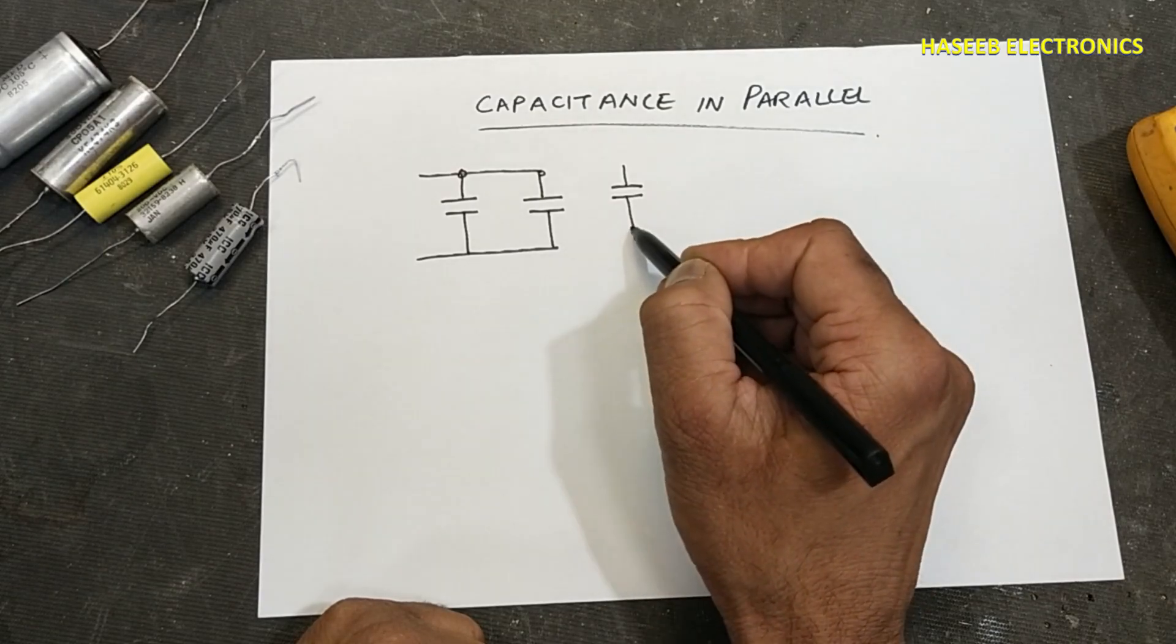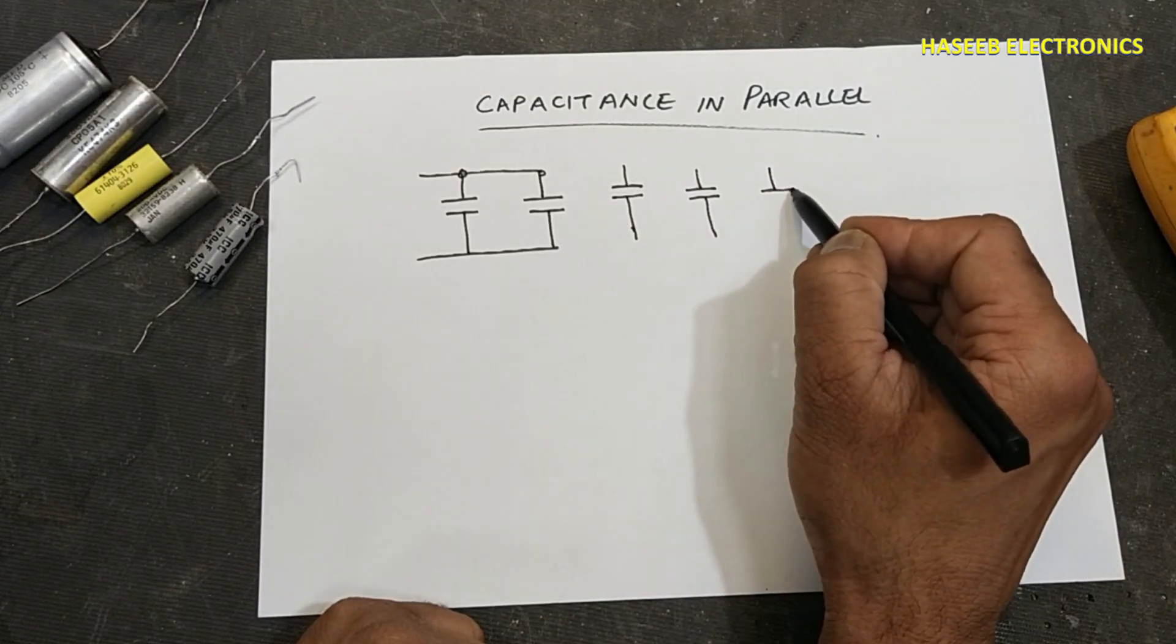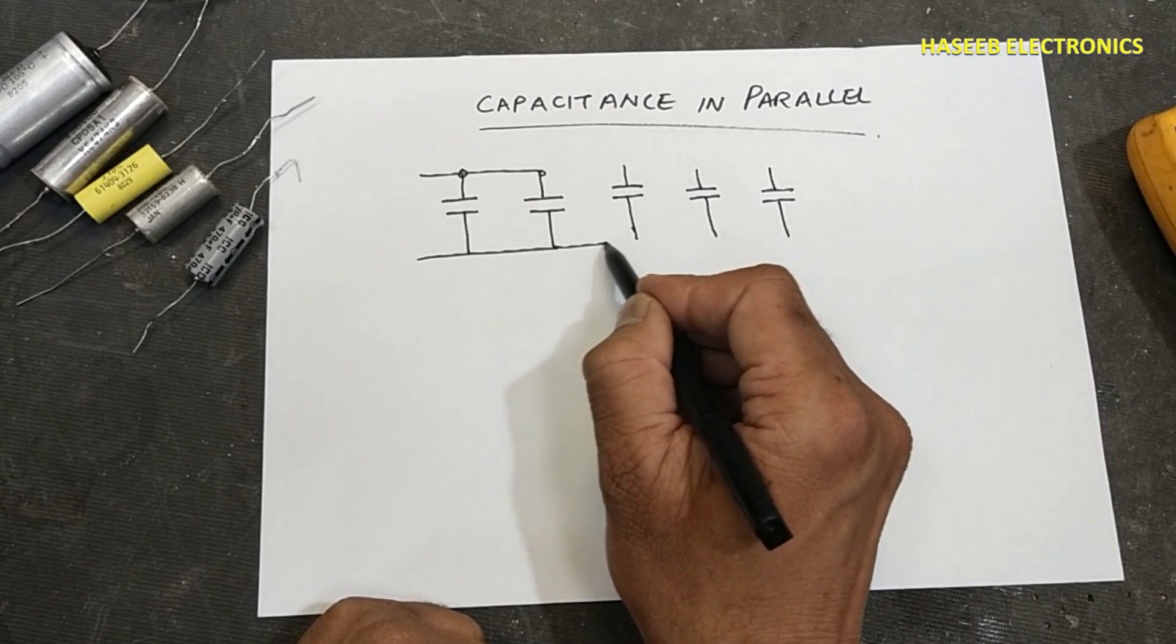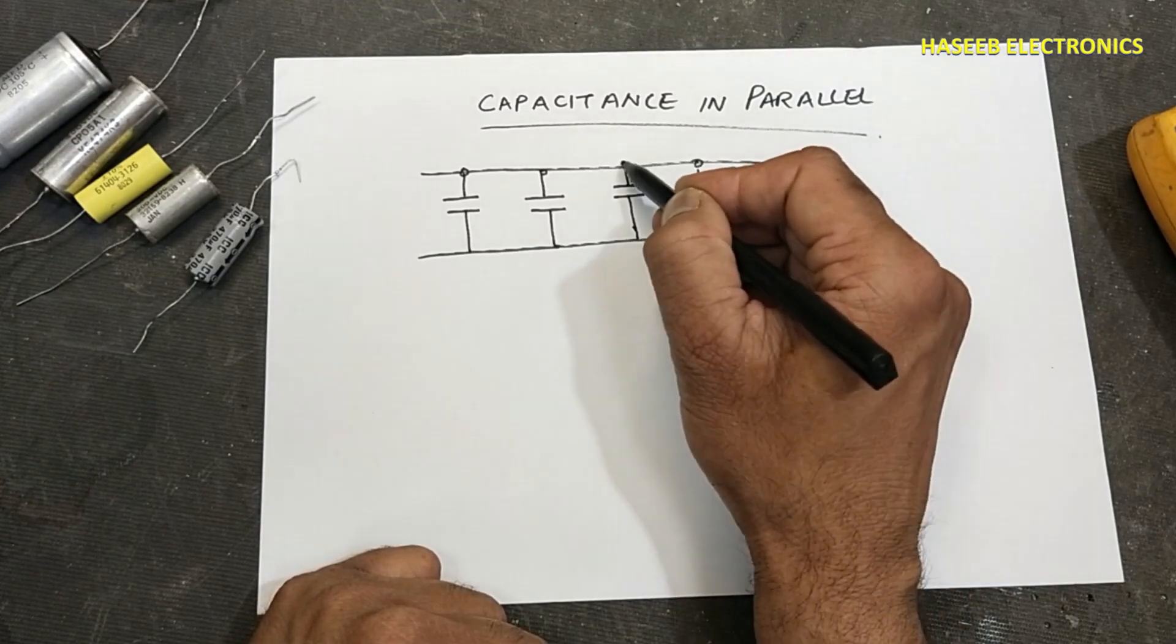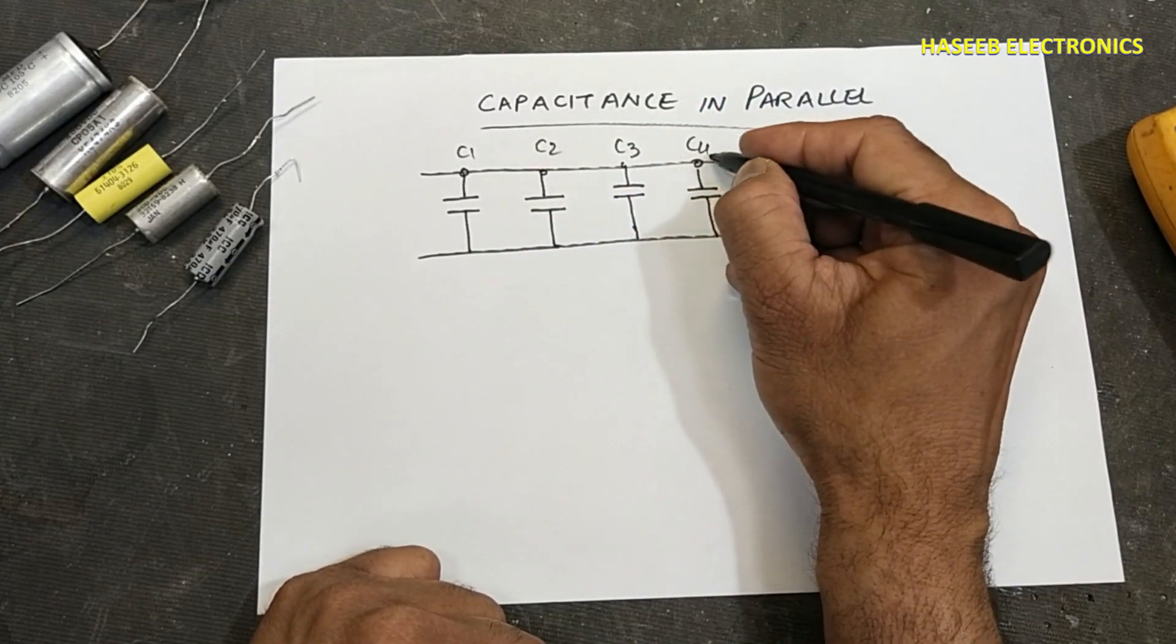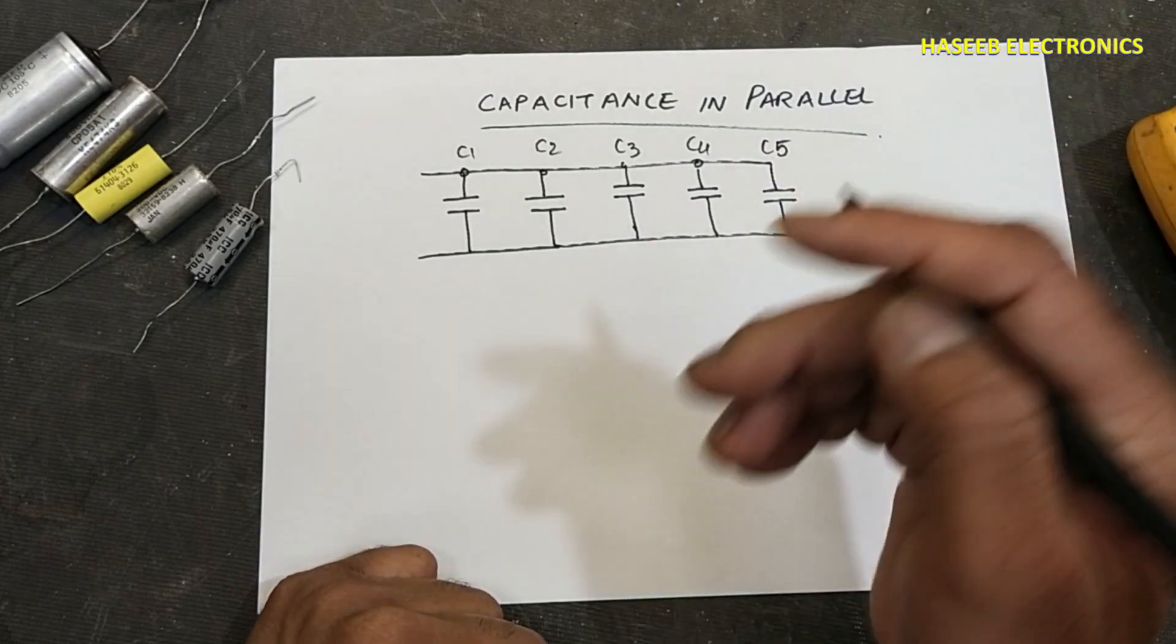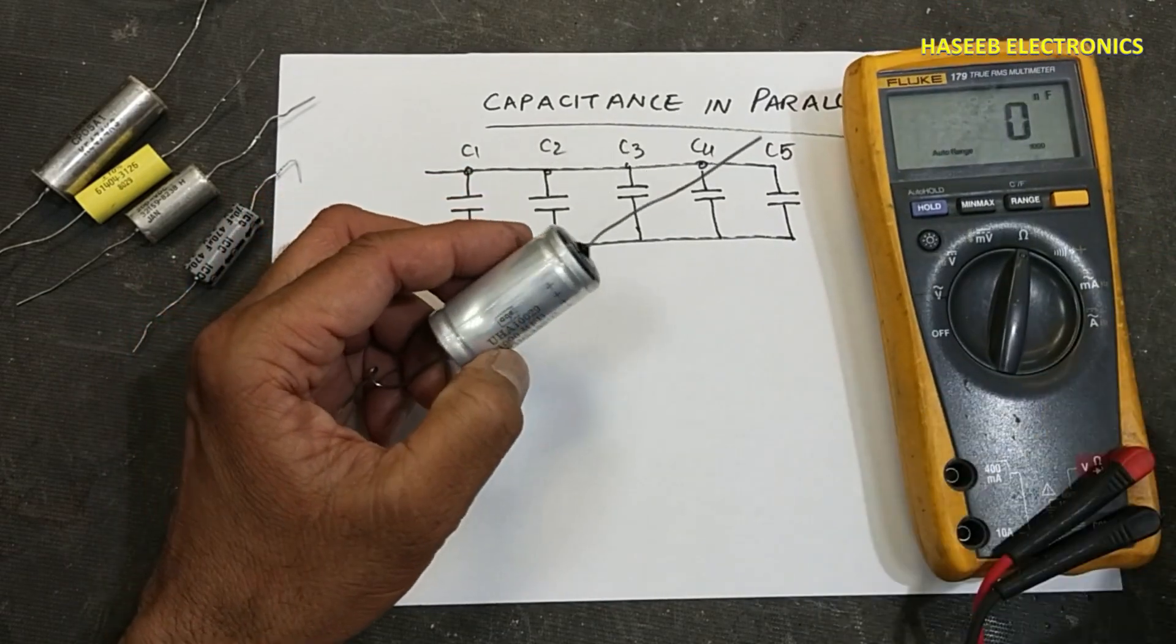Now for practice I am using five capacitors in parallel: C1, C2, C3, C4, C5. It is best practice to test the capacitance practically.